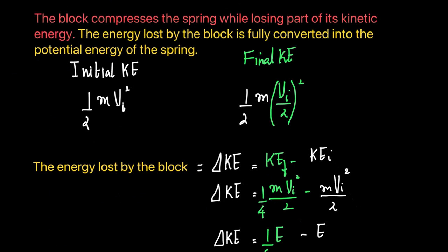The kinetic energy lost by the block is the change in kinetic energy. The initial kinetic energy is ½mv_i². The final kinetic energy is ½m·v_f², where v_f = v_i/2 since the speed is halved. So the final KE becomes ½m·(v_i/2)² = ½m·v_i²·(1/4).